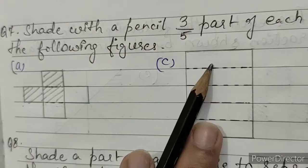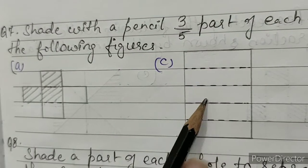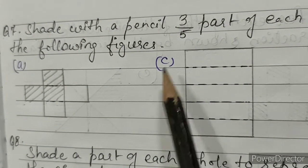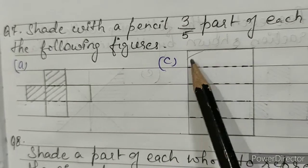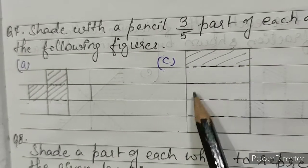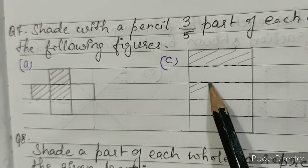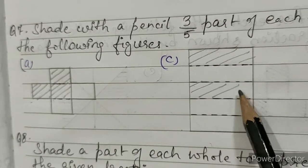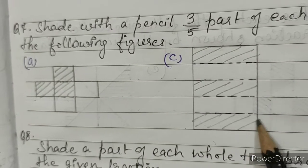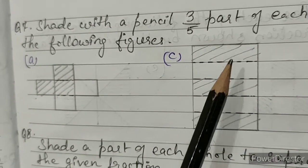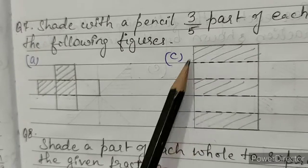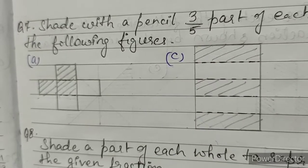C: this figure is also divided into 5 equal parts. We have to shade any 3 parts: 1, 2, 3. The shaded part is 3 fifths of this figure.